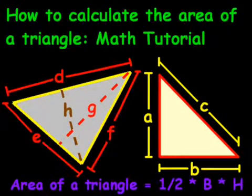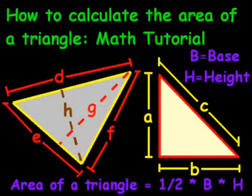Now the area of a triangle can be written in a simple formula. Basically, the formula is one-half times B times H. Then you're asking, what is B? What is H? Well, B is the base. H is the height.